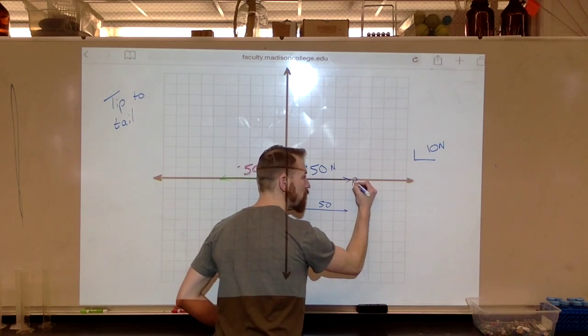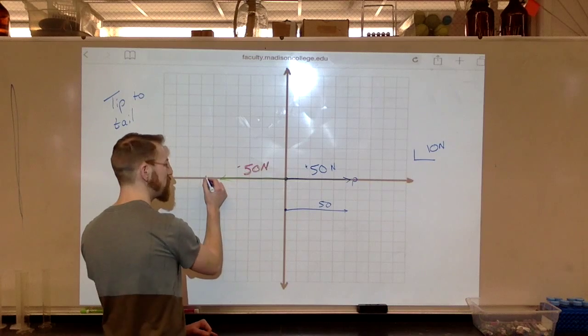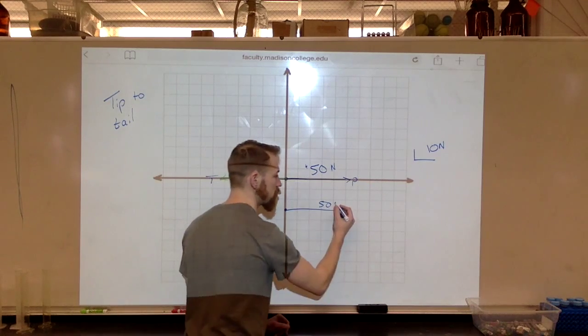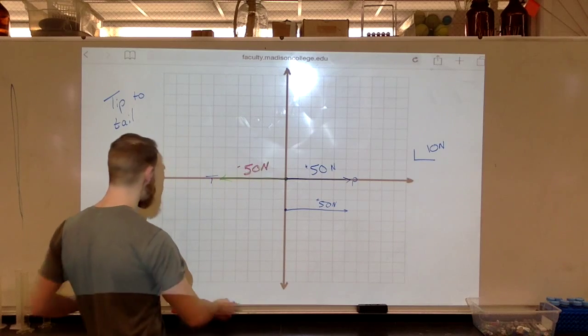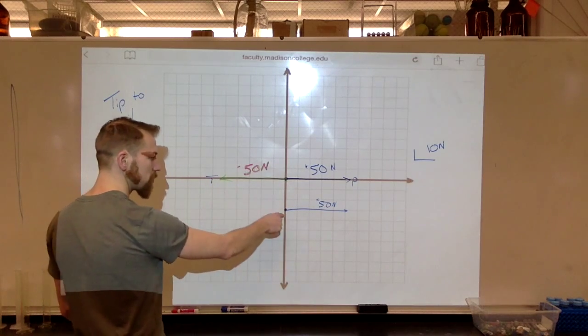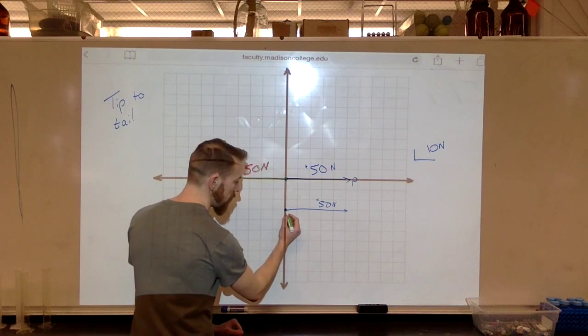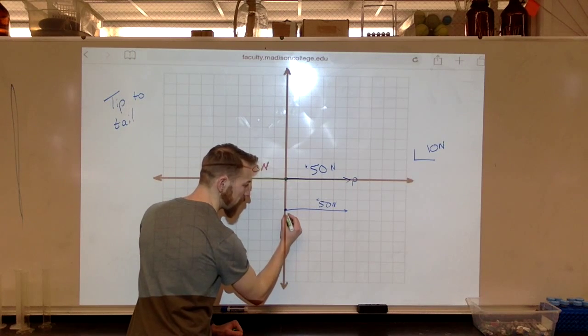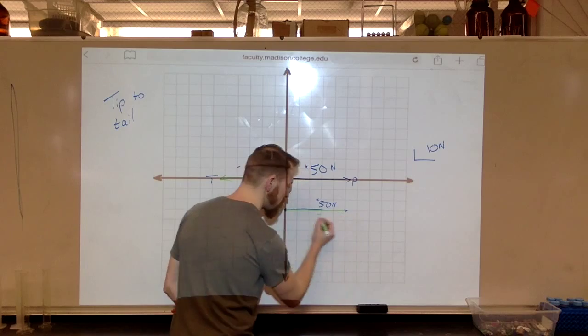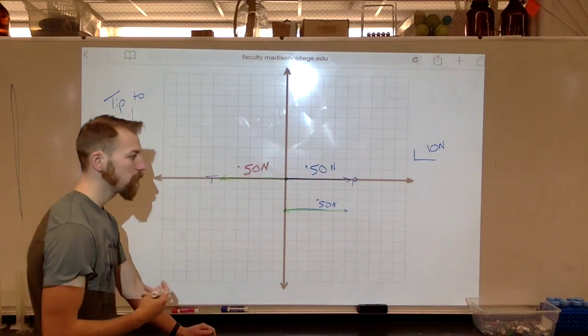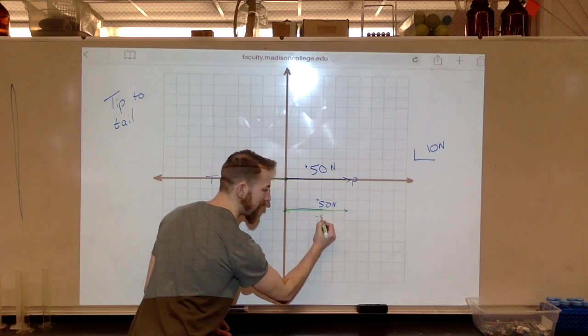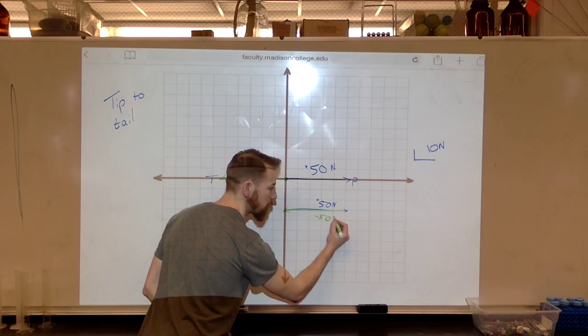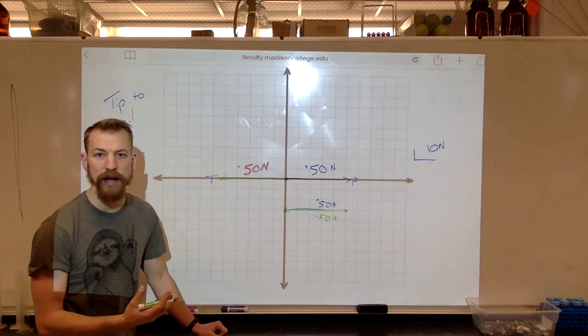I'm going to call it vector p for Porter. And this one will be vector t for Mr. T. That's Porter's vector. And if I draw my vector tip to tail, so I start the tip at this tail here. And I'm going to just draw it directly over 50. We can see that positive 50 and negative 50 cancel each other out.